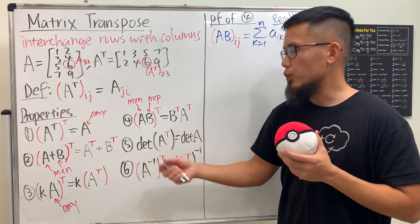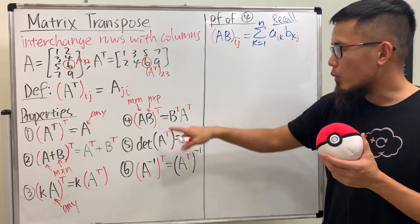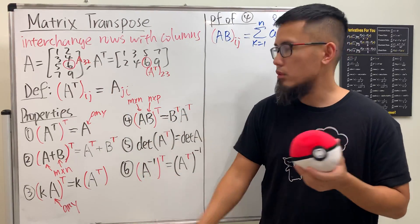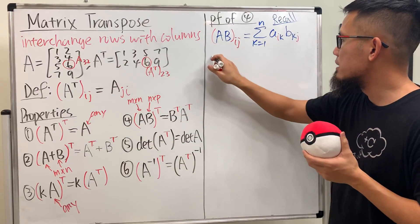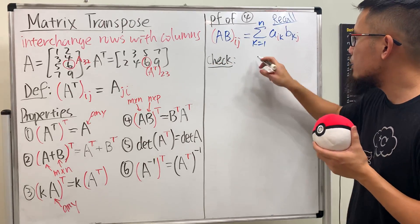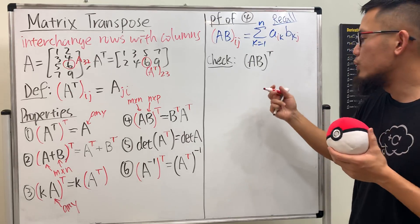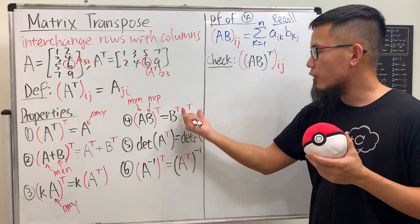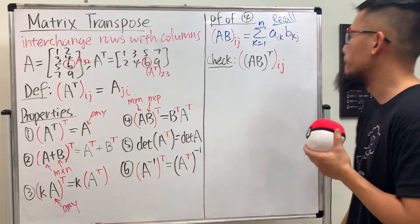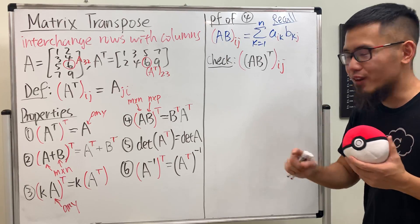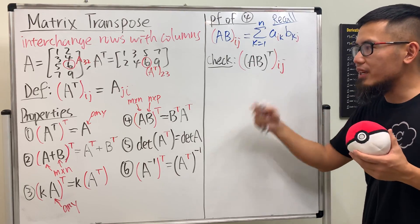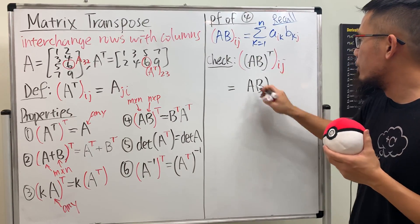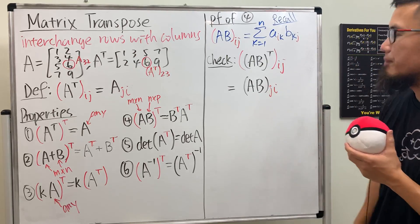To prove this, we go from the left-hand side and try to end up with the right-hand side. When showing transposes are equal, we just need to make sure all entries of the result are equal. So we check the I, J entry of AB transpose. To take care of the transpose, we switch I and J — so this is the same as the I, J entry of AB but evaluated at J, I: that is, AB at J, I.